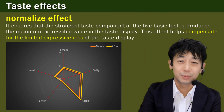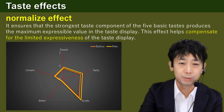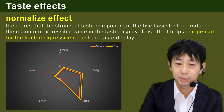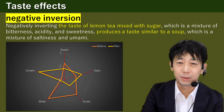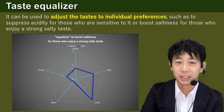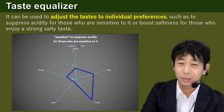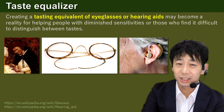Further, I developed prototypes of various taste effects. For example, I created a normalized effect which ensures that the strongest taste component of the five basic tastes produces the maximum expressible value in the taste display. This effect helps compensate for the limited expressiveness of the taste display. I also created effects like the negative inversion of a taste — for example, negatively inverting the taste of lemon tea mixed with sugar, which is a mixture of bitterness, acidity, and sweetness, produced a taste similar to a soup, which is a mixture of saltiness and umami. And I created a taste equalizer. It can be used to adjust the taste to individual preferences, such as to suppress acidity for those who are sensitive to it or boost saltiness for those who enjoy a strong salty taste. Creating a tasting equivalent of eyeglasses or hearing aids may become a reality for helping people with diminished sensitivities or those who find it difficult to distinguish between tastes.